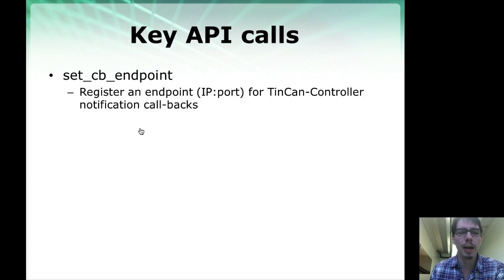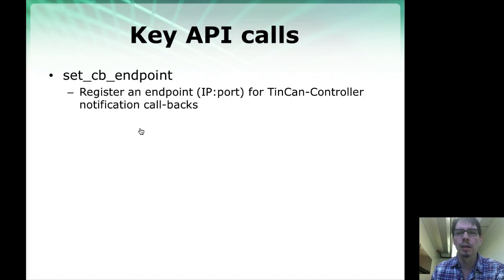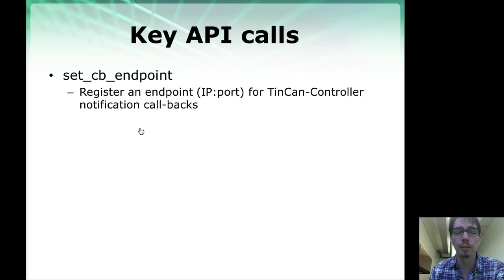Another API call lets the controller establish a callback endpoint for any notifications coming from Tincan up to the controller. This is an endpoint IP port that the Tincan process can send messages to, and the controller will receive and handle them. The controller has a UDP server running on these IP ports to listen to callbacks from Tincan.